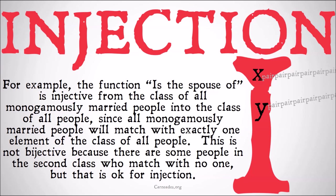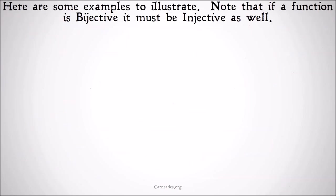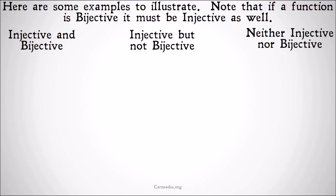But that's okay for injection — it's just not bijective. Here are some examples to illustrate. Note that if a function is bijective, it must be injective as well. So we have functions that are injective and bijective, injective but not bijective, and neither injective nor bijective. So let's take a look.